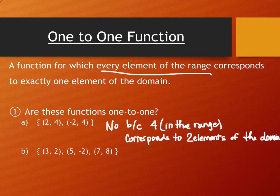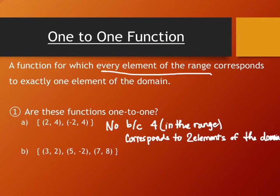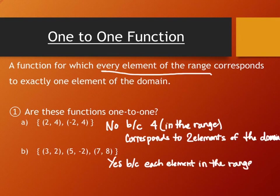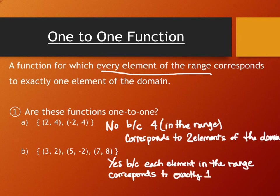On part B, what elements do we have in the range? Two, negative two, and eight — three elements. Do they each correspond to exactly one element of the domain? Yes, they do. So this one is one-to-one. Yes, because each element in the range corresponds to exactly one element in the domain.